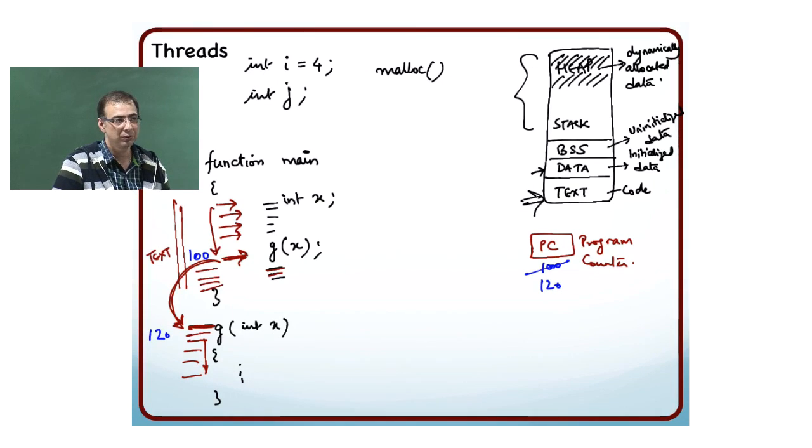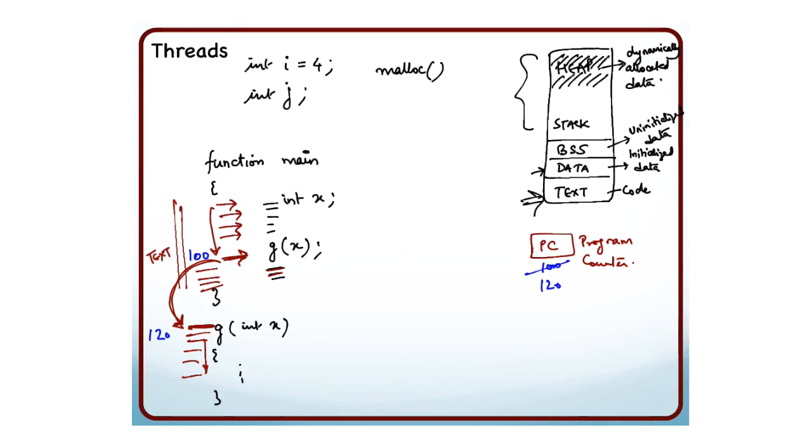What is very important is that whenever I make a function call I store the value of the return address. That is typically what goes into the stack. Whenever a function call is made, there is a frame that is created in the stack. The first thing I store is the return address, in this case I will store the value 101 over here. And then I change the value of program counter and then I start executing instructions from there.